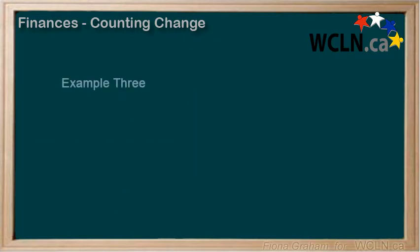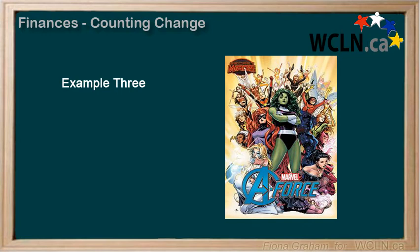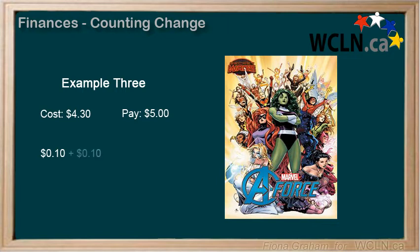Here's another example. Let's say you buy an Avengers comic book for $4.28, which would get rounded to $4.30. And let's say you give the cashier a $5 bill. You would start by adding 10 cents to your $4.30 to get up to 40 cents, and another 10 cents to get to 50 cents. And now you would add a whole 50 cents to get to the next whole dollar. So that would be 10 cents plus 10 cents plus 50 cents, giving you 70 cents total change.